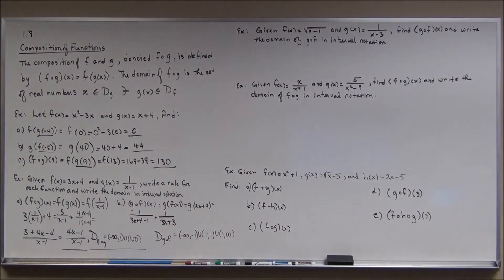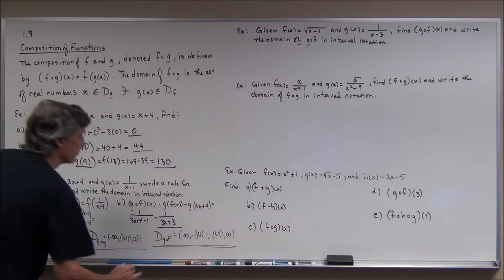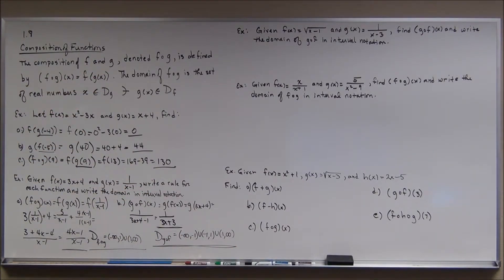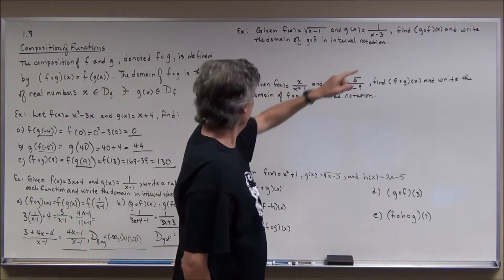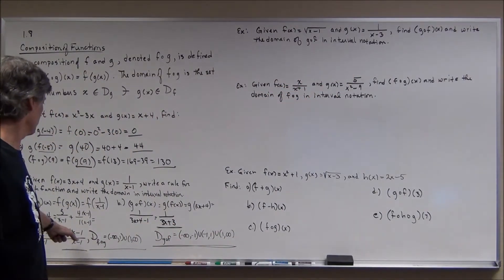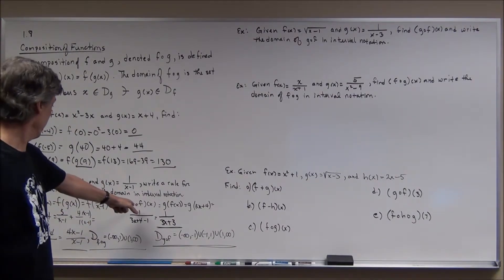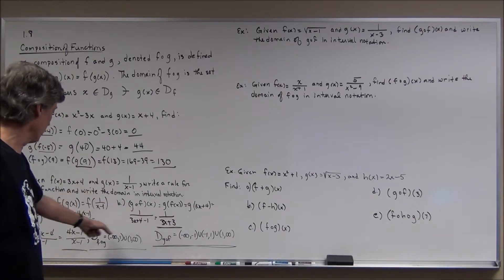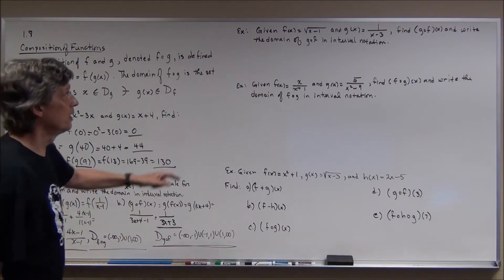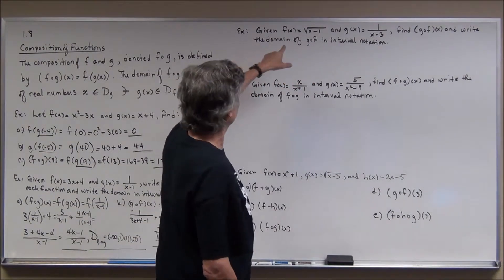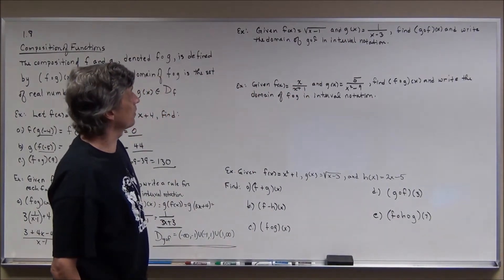It's a little bit more complicated — you have to be on your toes. Comparing f circle g and g circle f, we got two very different looking functions. So in general, composition of functions is not commutative. Now we're going to do g circle f of x with f of x equals the square root of x minus 1 and g of x equals 1 over x minus 3, and then find the domain.